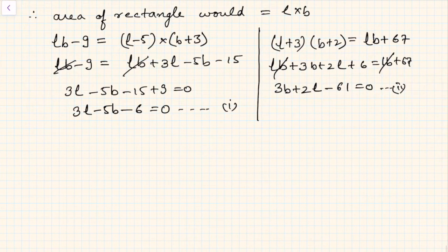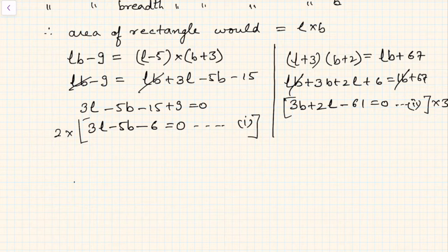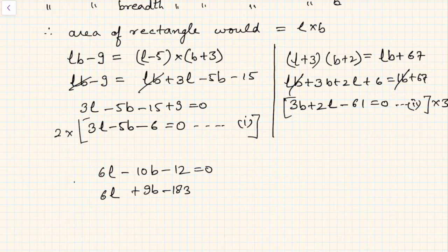So what can we do? We can use the method of elimination. Let us multiply the first equation by 2 to get 6L minus 10B minus 12 equals 0. And multiply the second equation by 3 to get 6L plus 9B minus 183 equals 0.